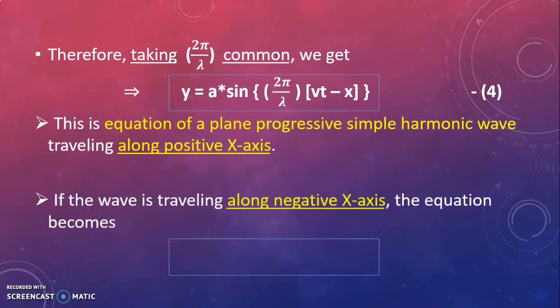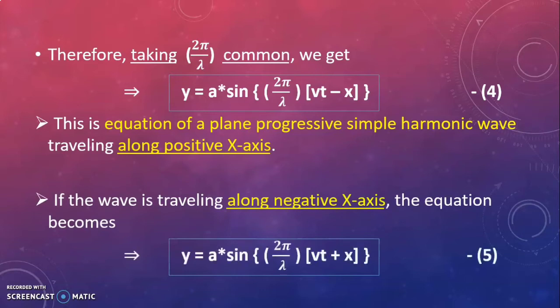If the wave is traveling along the negative x-axis, the equation becomes y = a sin((2π/λ)(vt + x)). Using the equation of a plain progressive simple harmonic wave we can find the differential equation of wave motion and the velocity of a progressive wave in a medium.